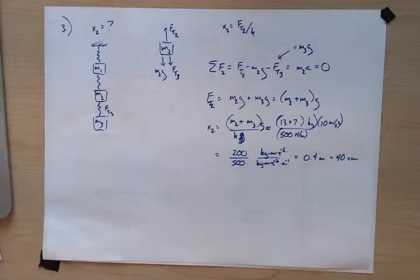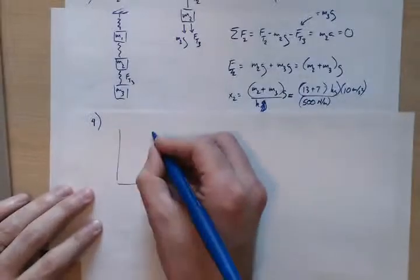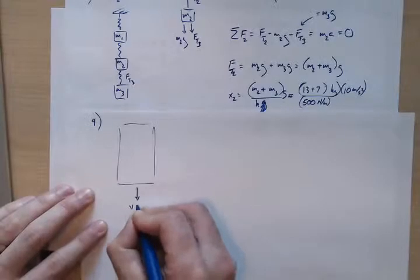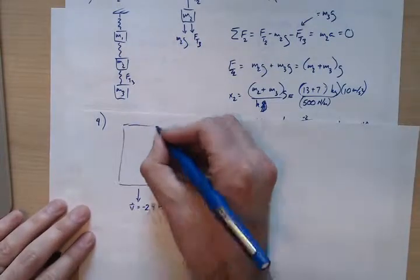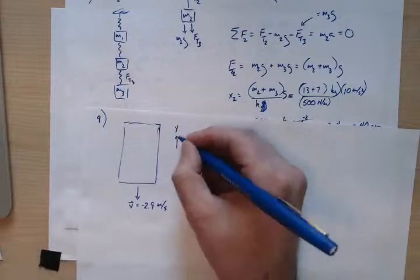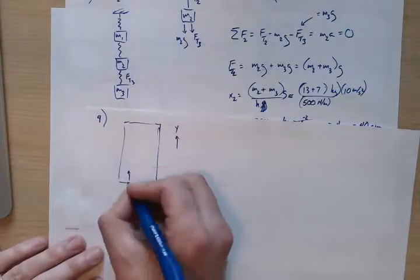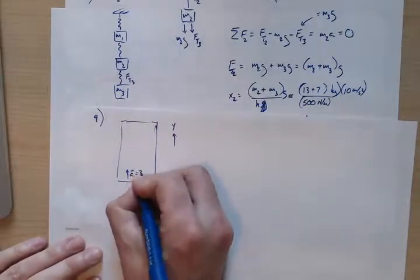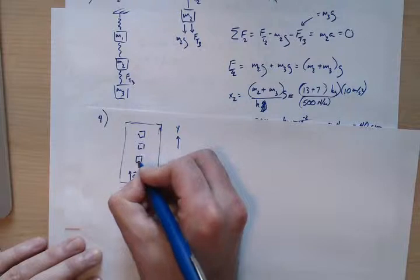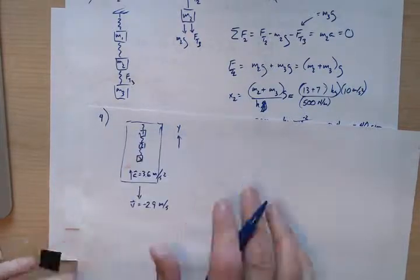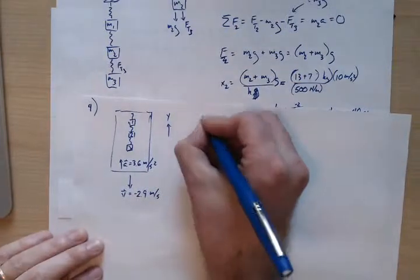For part four, the elevator is now moving downwards and decelerating — the rate of descent is decreasing — so there's a positive acceleration in the upward y-direction. We have our three masses again: m1, m2, m3.